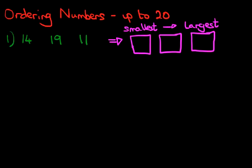So how would we work this out? One method is that you can start from zero and count upwards, and keep counting until you hit each of these numbers and write them down. You can do this with numbers up to 20, but what if the numbers are larger? Then it becomes a little bit more difficult. So what we're going to do is use the tens and units and the counting method.